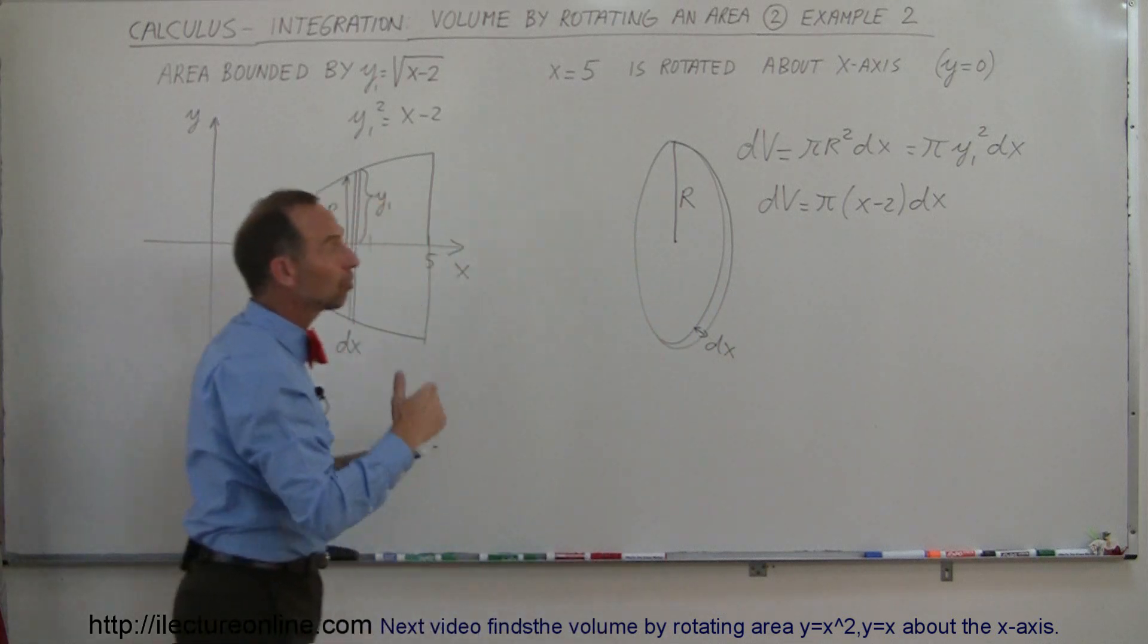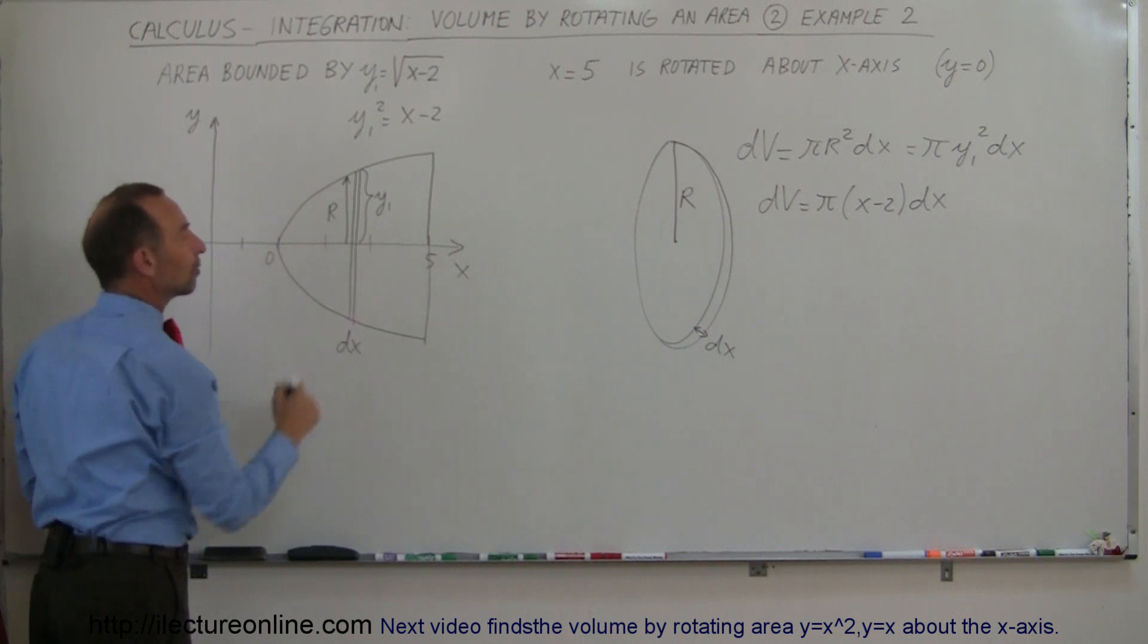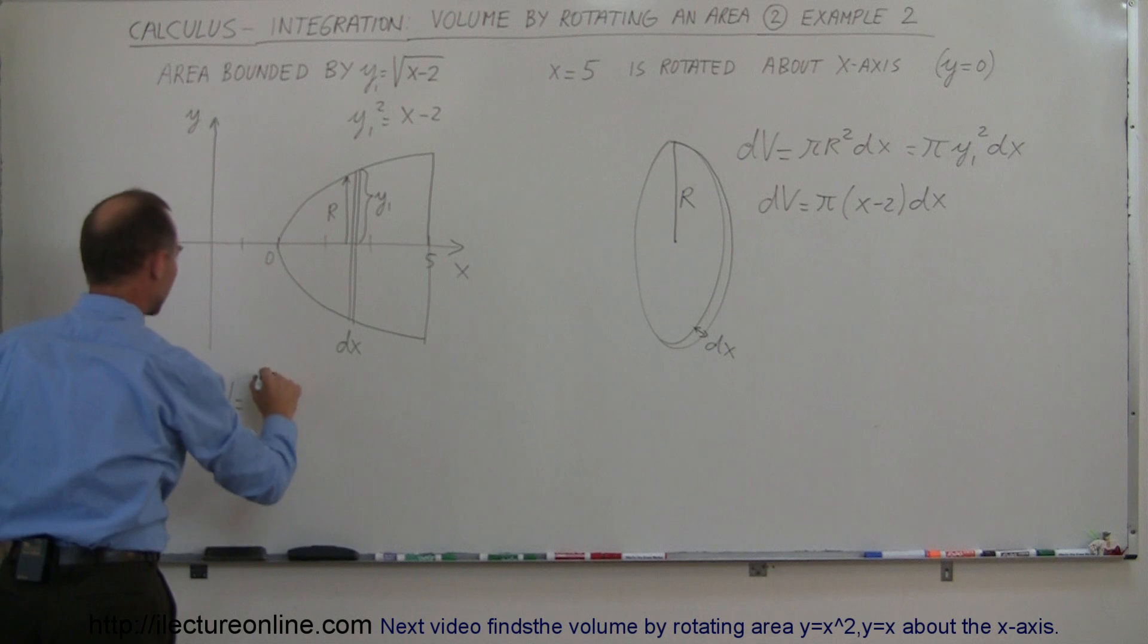If I then integrate that, sum up all the little slices, which is integrating from this limit to that limit, from x equals 2 to x equals 5, I can find the volume of that.